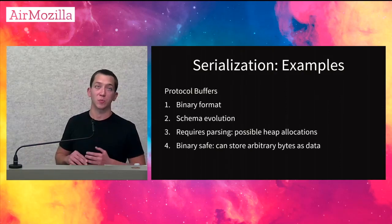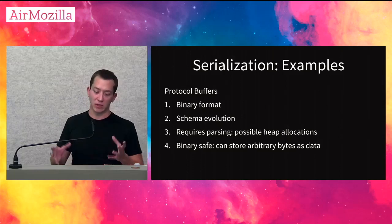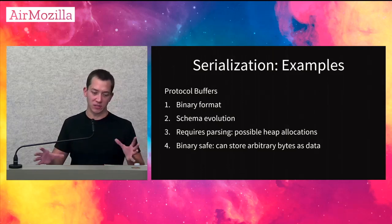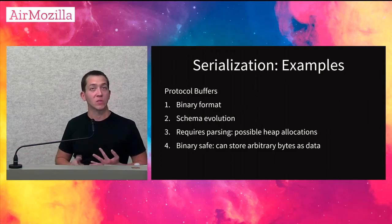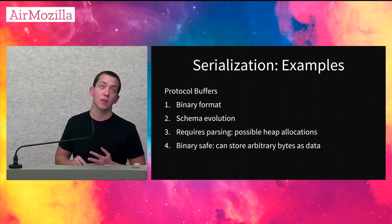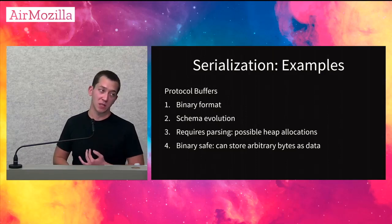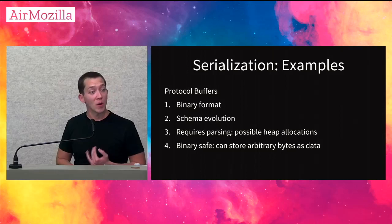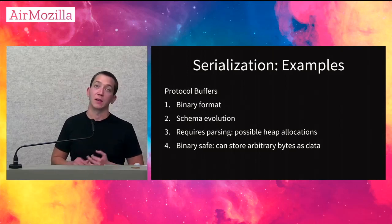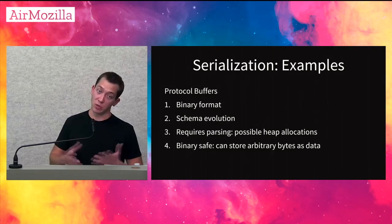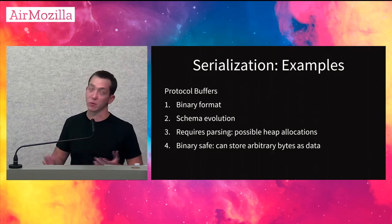Second is protocol buffers, which has had a huge impact on the serialization landscape. It's a binary format, so not human readable. You can evolve it with a schema — that's a useful property. It does still require parsing and heap allocations to read the data. But unlike JSON, it's binary safe, so you can store arbitrary bytes inside it — files, whatever you want.